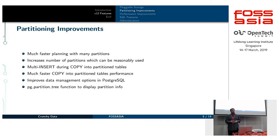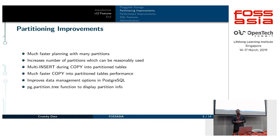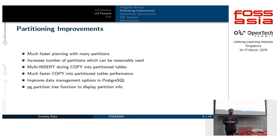That allows much more flexibility in how you do data management with Postgres, because partitioning is really key for data management purposes. Another improvement is that the multi-insert option inside the backend — where you can insert multiple rows at a time — was disabled for partitioning because it was complicated to ensure correctness when a tuple needed to go to a different partition. That's been fixed and will go into V12, meaning ingest performance when doing a COPY into a partitioned table will be much better.